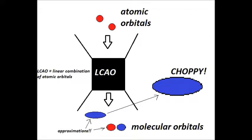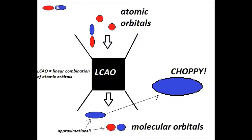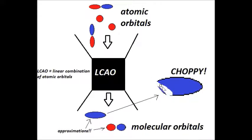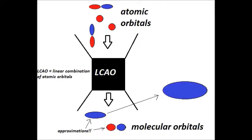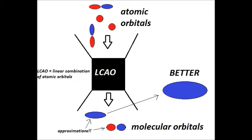If we want to get something less choppy, maybe we can add more atomic orbitals to our input to better approximate the molecular orbitals coming out. So I'm going to throw in two extra p orbitals. In reality, you would get out more than two molecular orbitals doing this, but we're only going to consider these two. Let's put in the two extra p orbitals along with the two original s orbitals into our LCAO black box. Zooming in again — it looks much smoother, indicating a better estimation of what the real molecular orbital looks like, and the energy will also be closer to reality.